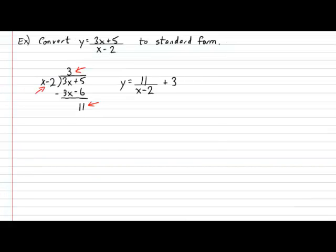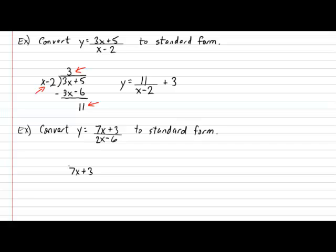Suppose I asked you to convert the following rational function from general form to standard form. First, let's set up our long division. So we have 7x plus 3 divided by 2x minus 6. Now, there's something that you have to do during the conversion process that you wouldn't normally have to do during normal regular polynomial long division.